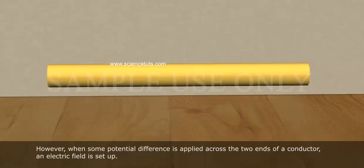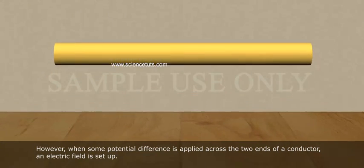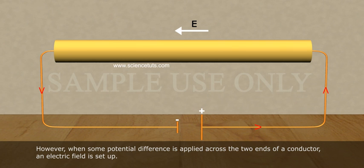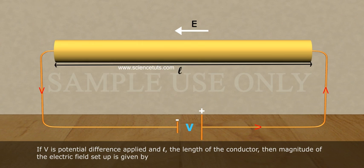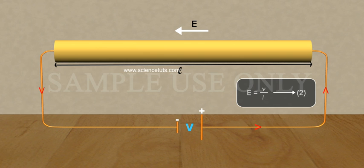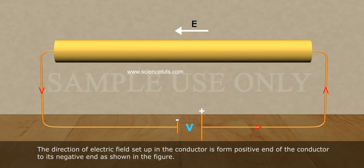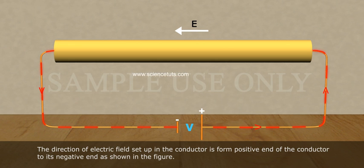However, when some potential difference is applied across the two ends of a conductor, an electric field is set up. If V is the potential difference applied and L is the length of the conductor, then the magnitude of the electric field set up is given by E = V/L. This is Equation 2. The direction of the electric field set up in the conductor is from the positive end of the conductor to its negative end, as shown in the figure.